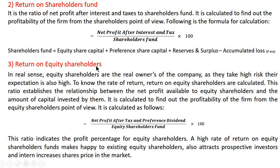The third ratio is return on equity shareholders fund. Equity shareholders are the real owners of the company; as they take high risk, they expect more return. This ratio establishes the relationship between net profit available to equity shareholders and the amount of capital invested by them. The formula is net profit after tax and preference dividend — also referred to as earnings available to equity shareholders — divided by equity shareholders fund, multiplied by 100. A high rate of return makes existing equity shareholders happy, attracts prospective investors, and increases share price in the market.